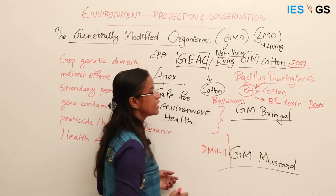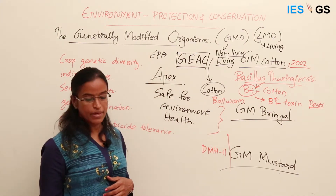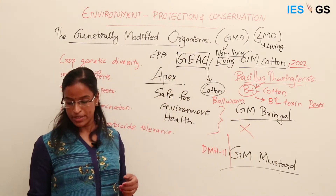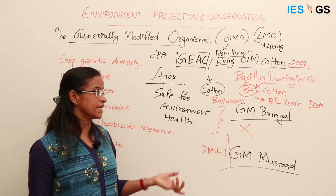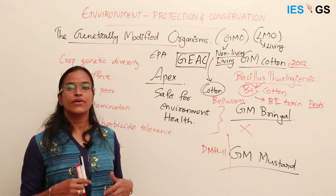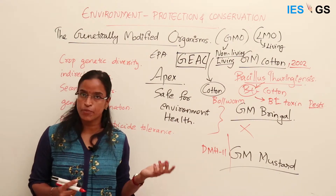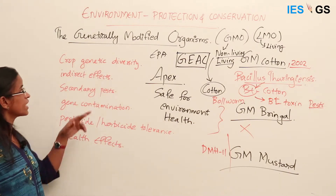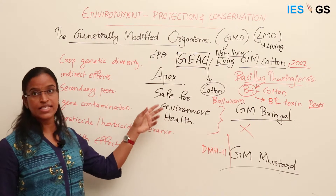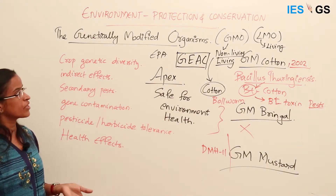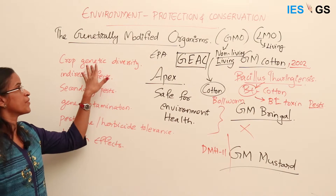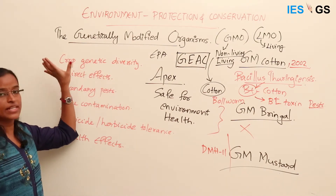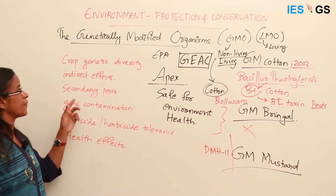Despite the GEAC clearance, the government put a moratorium on the release of GM Brinjal based on allegations from anti-GM activists. People protested against GM crops due to concerns that they would adversely impact genetic diversity — if GM crops are adopted, natural crop varieties will be ignored, affecting crop genetic diversity.